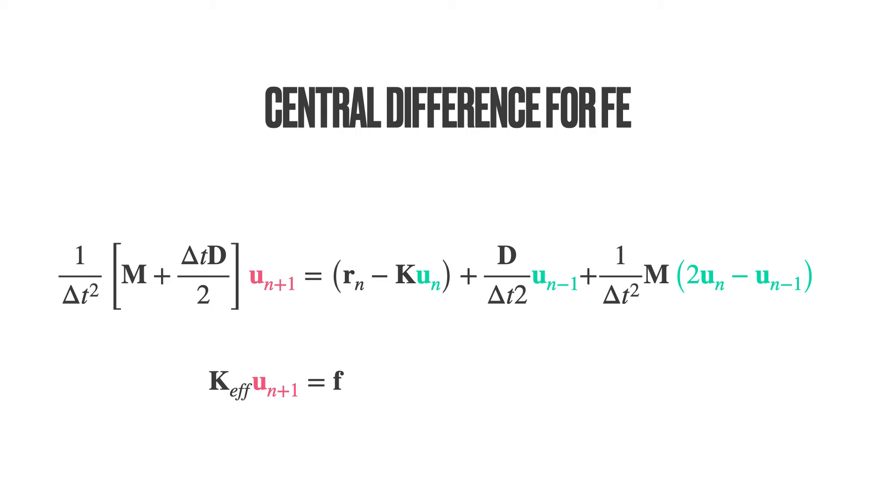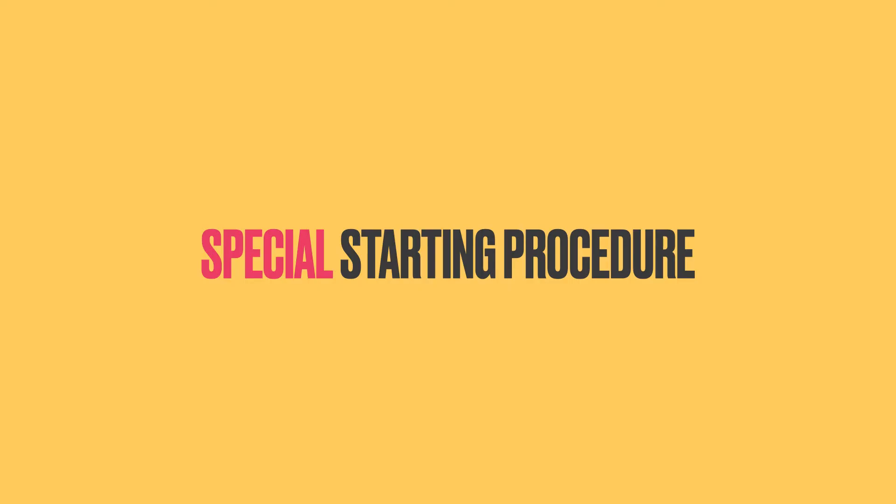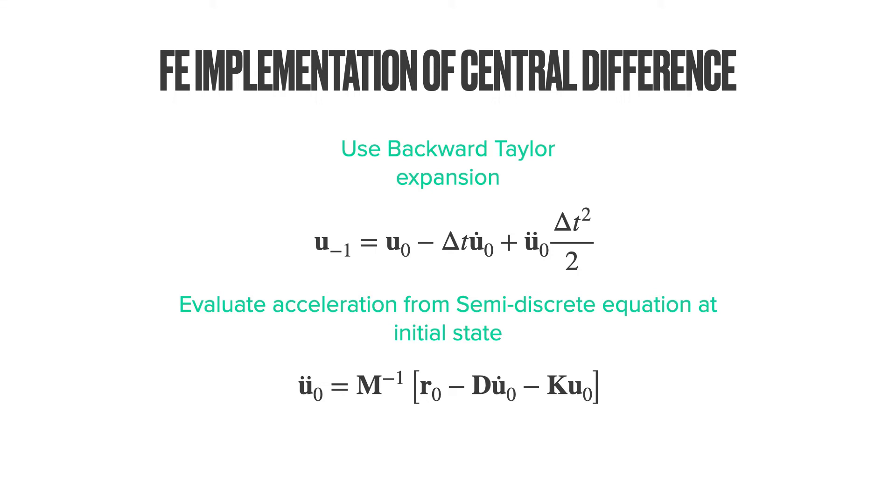Looking at this expression, some of you might already be wondering how to start the simulation because we have a term U minus 1. Yes, we need a special starting procedure. In addition to the initial condition, the velocity and displacement U0 and U dot 0, we need to go back in time to compute U minus 1. Well, this special starting procedure is pretty straightforward. We can make a backward Taylor expansion and for the initial acceleration, we can use the balance equation at time t equals 0.